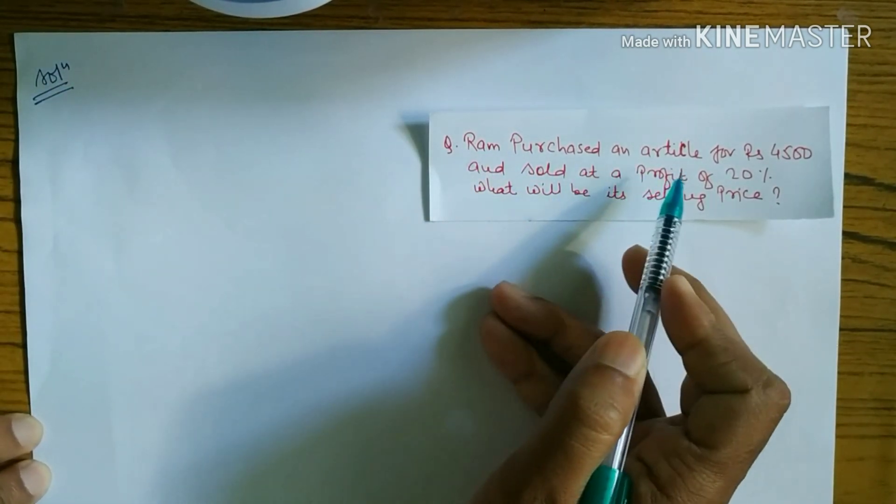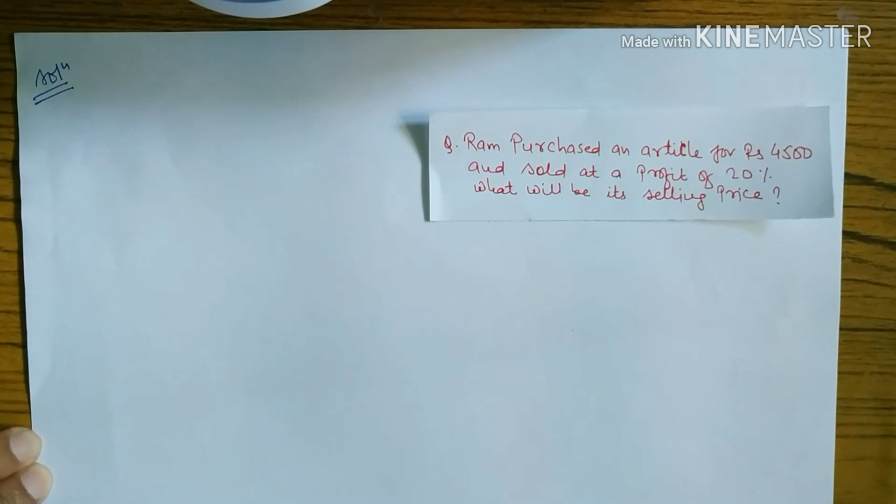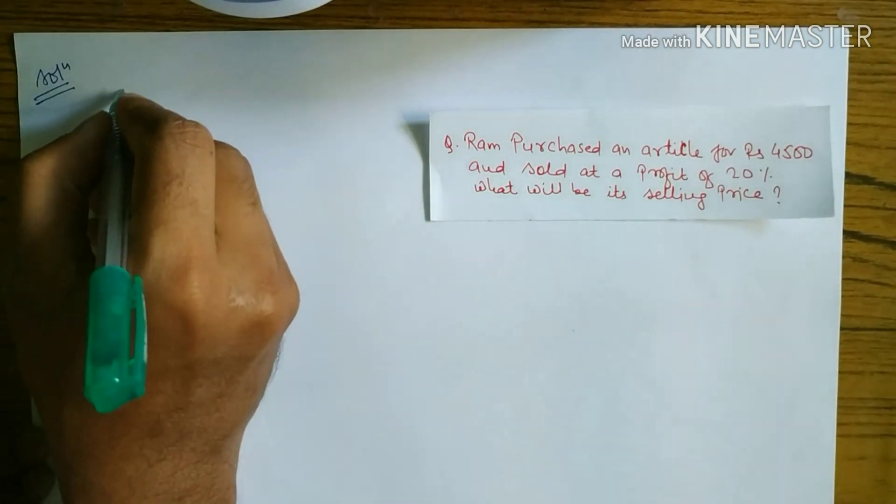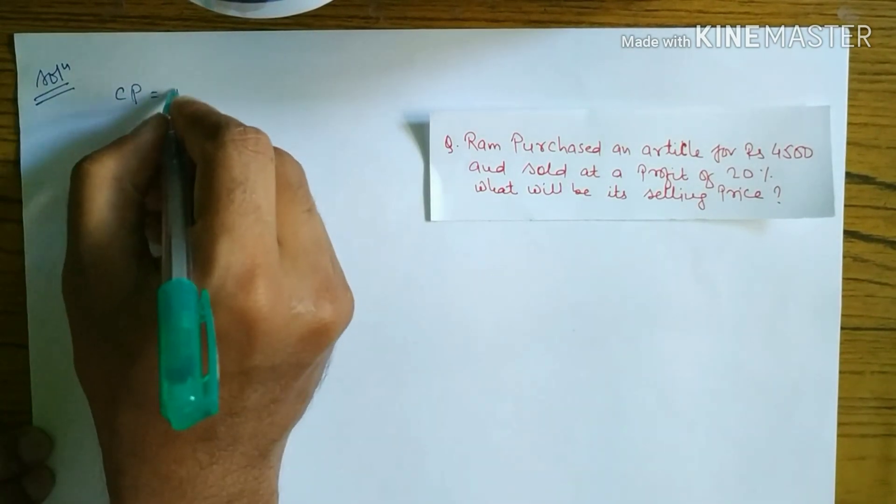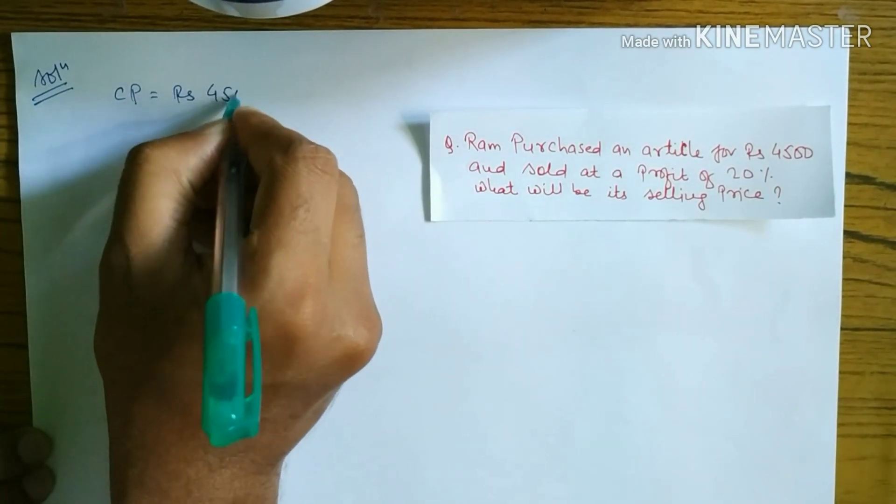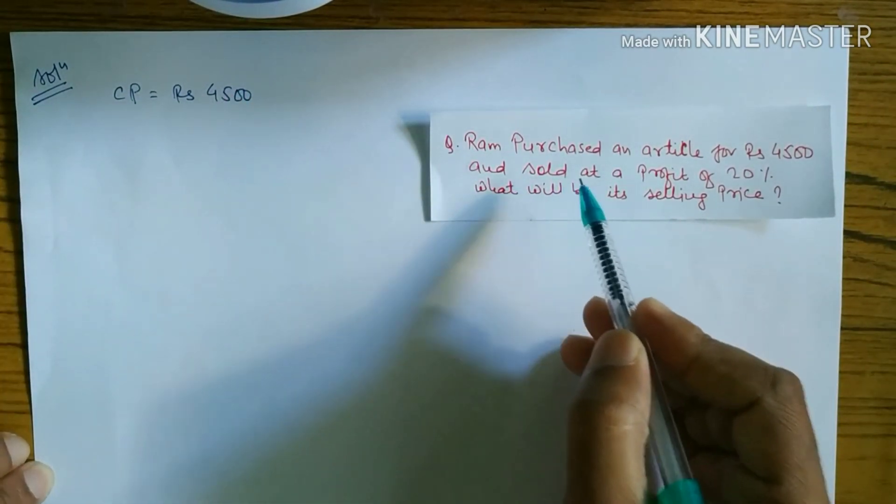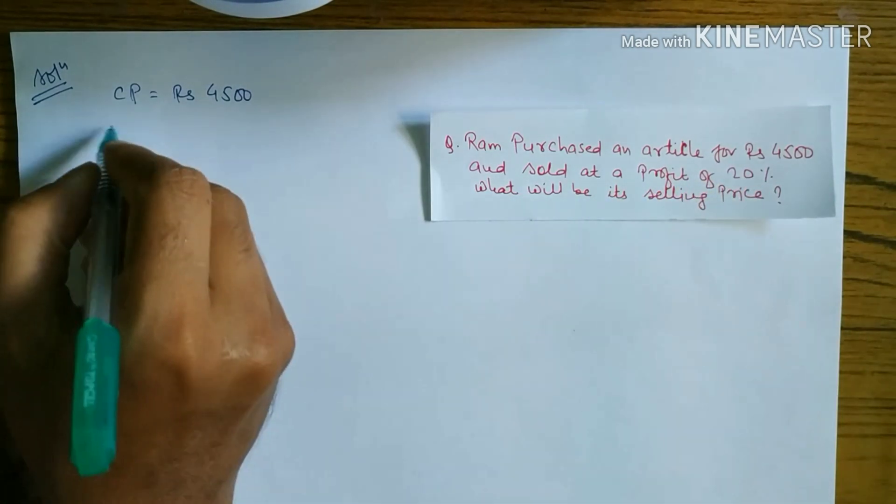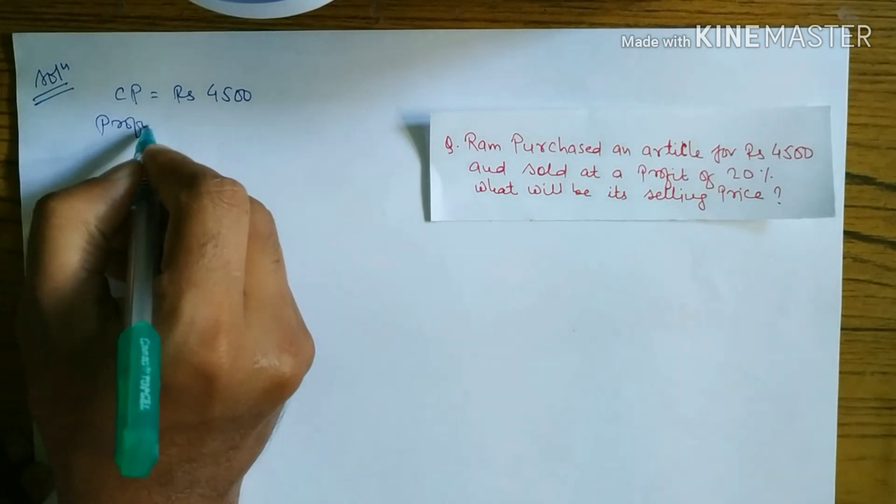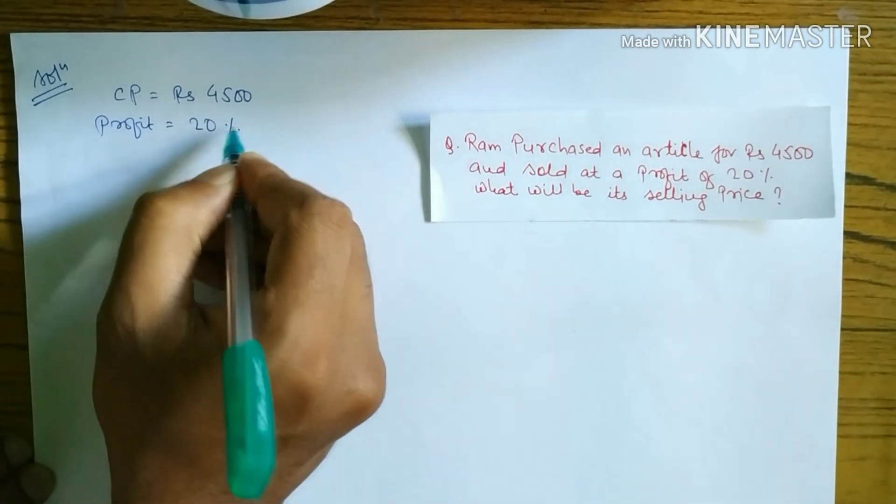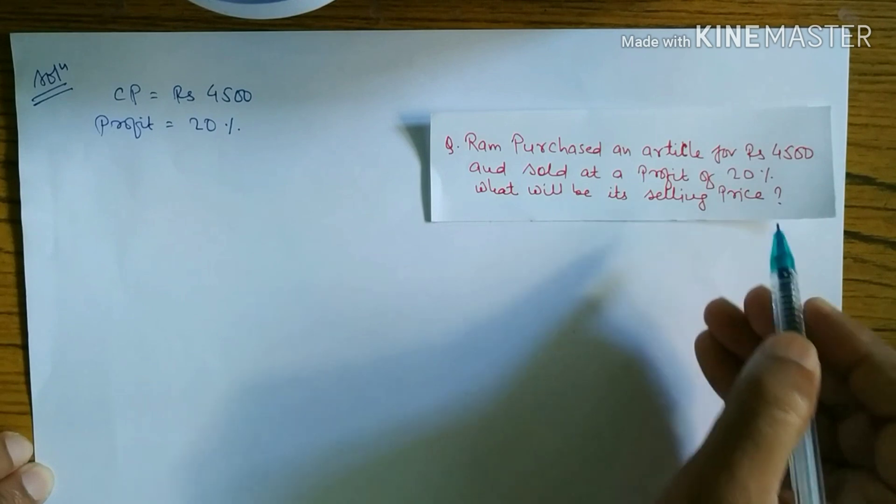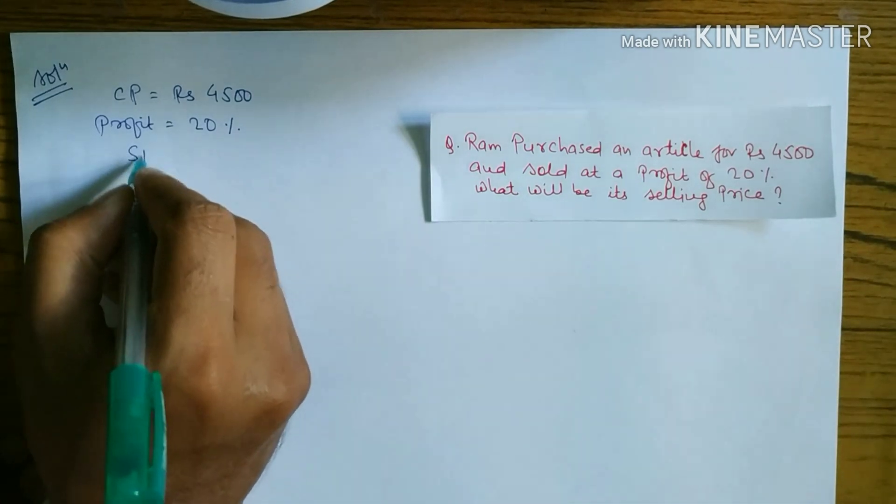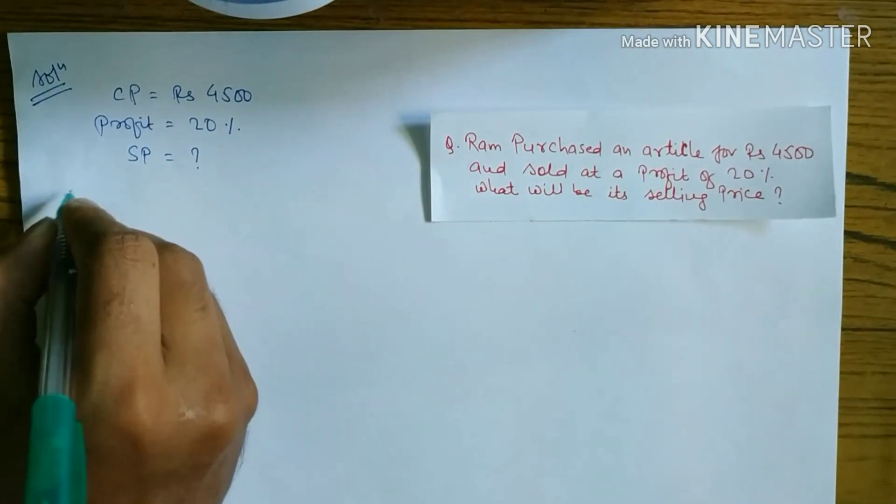Ram purchased an article for rupees 4,500. Purchasing the article means cost price. CP is equal to rupees 4,500, and sold at a profit of 20 percent. Profit is equal to 20 percent. What will be the selling price? We have to find out SP, selling price.